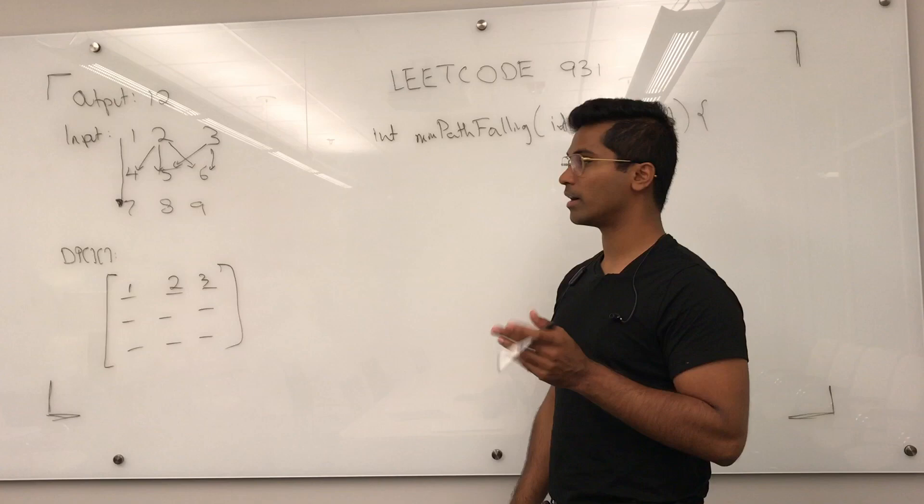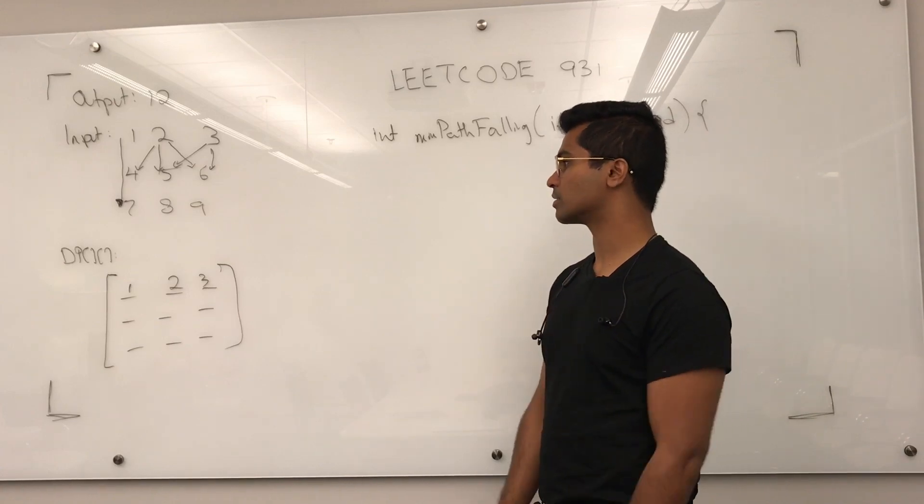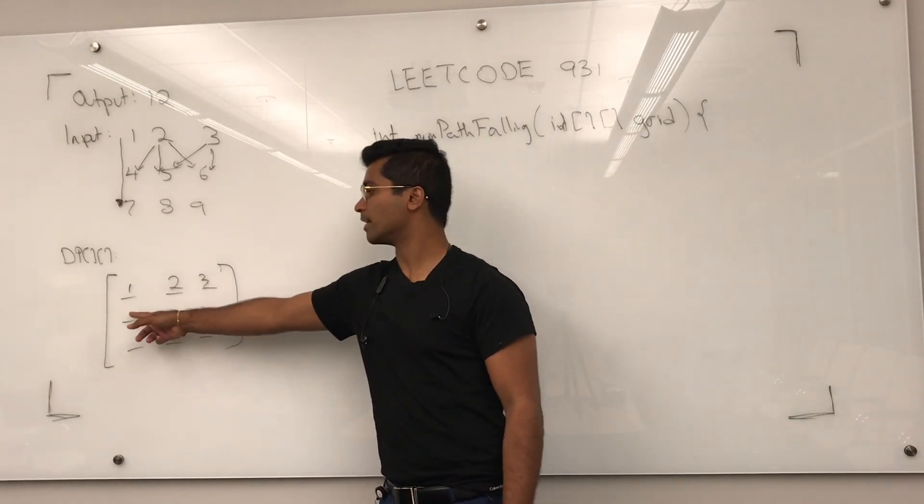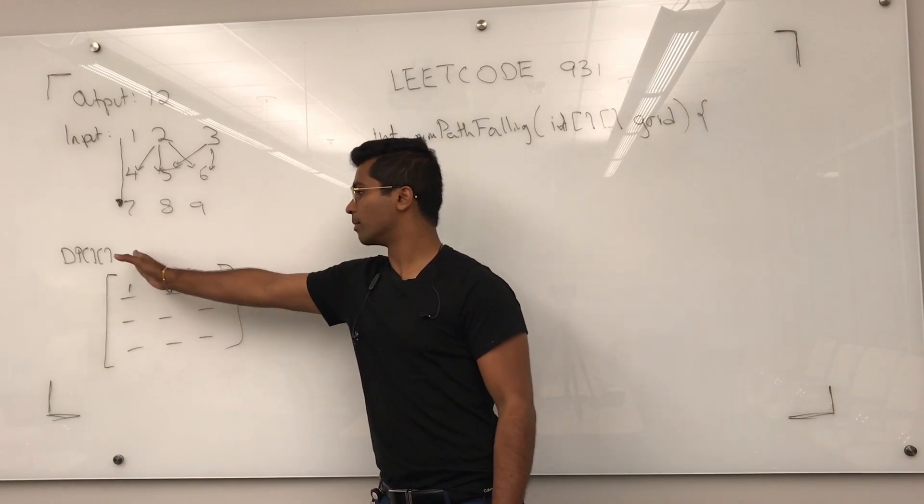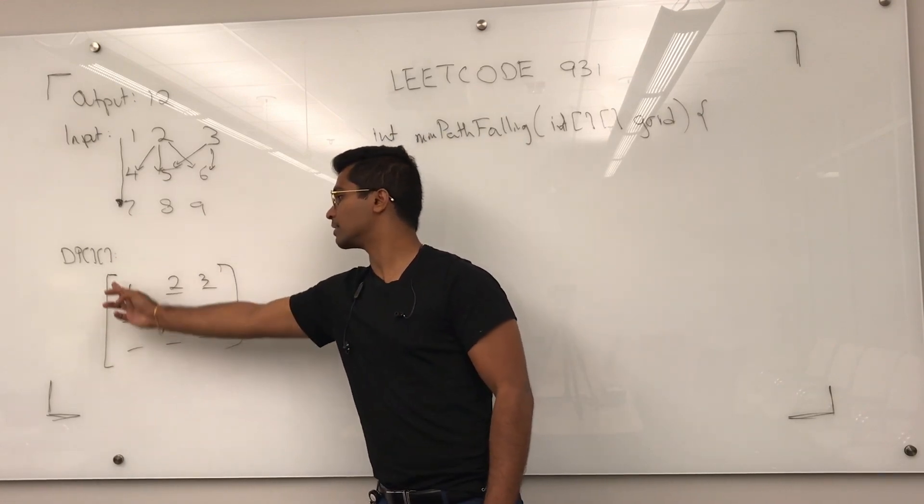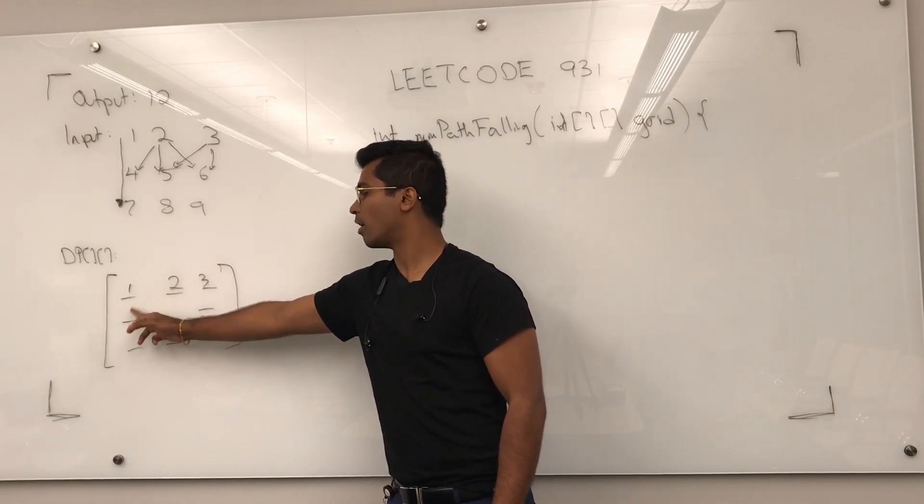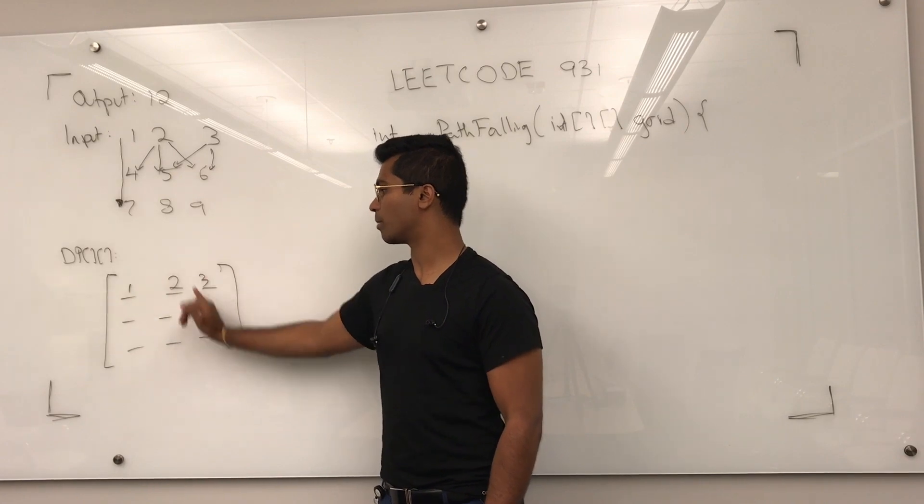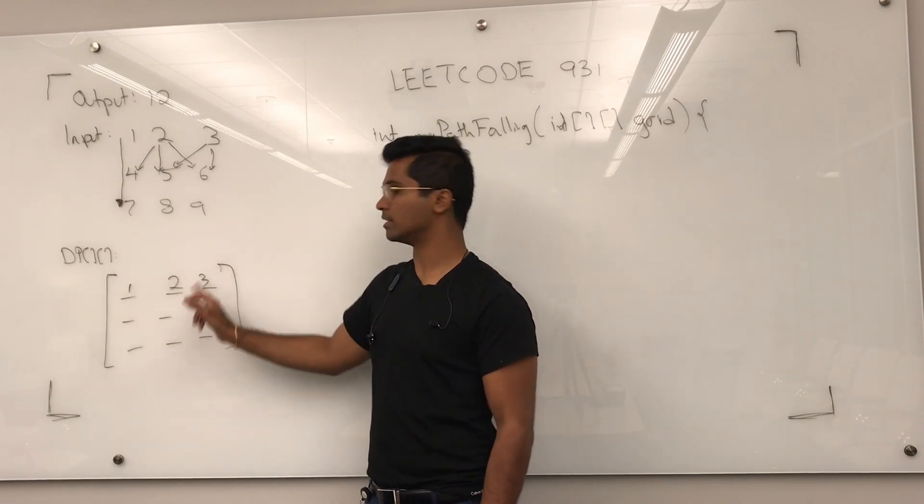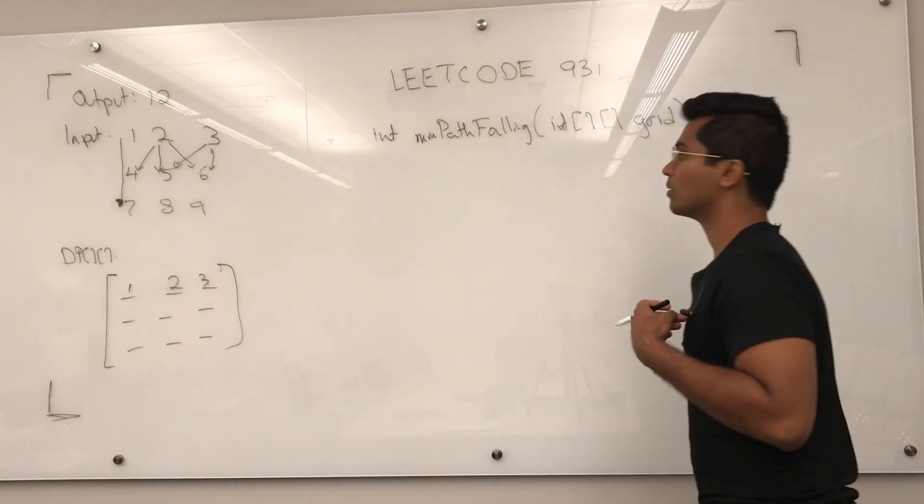Now, the way I handled the edge cases was if an index is on the edge, if a number is on the edge, then it's just going to get its upper and upper right or upper and upper left. Otherwise, it's going to get the DP from the previous three. So, let's get into the code.